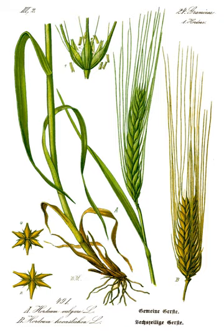Hulless or naked barley, Hordeum vulgare L. var. nudum, is a form of domesticated barley with an easier-to-remove hull. Naked barley is an ancient food crop, but a new industry has developed around uses of selected hulless barley to increase the digestible energy of the grain, especially for swine and poultry. Hulless barley has been investigated for several potential new applications as whole grain and for its value-added products, including bran and flour for multiple food applications.